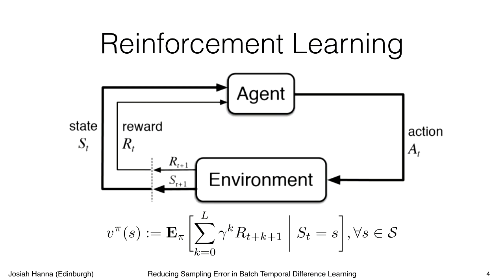This paper is about how to learn the value function accurately, because you have to learn it through actually interacting with the environment and collecting experience. Our paper focuses on how to learn this accurately, and you can think of this as a building block for how to learn a better policy, which is the ultimate goal of reinforcement learning.